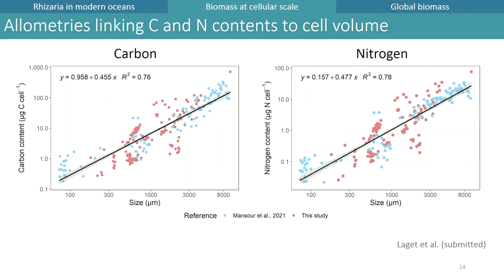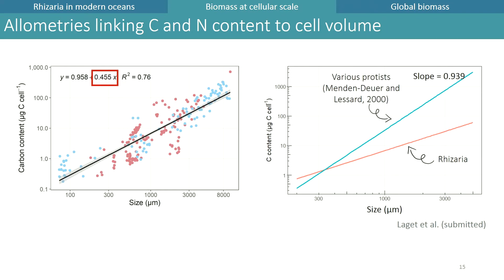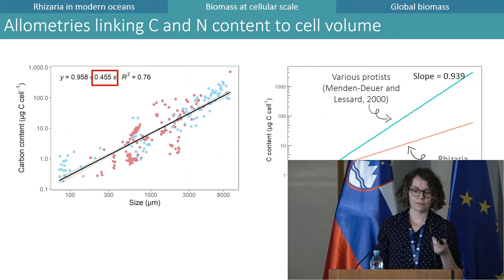Looking at the R-squared values, they are quite high, meaning that size can explain much of the variability in elemental composition. We then compared the slope of the carbon-to-size relationship to that found previously by Menden-Deuer and Lessard for various protists and found that the slope for Rhizaria was significantly lower. This means that for the same increase in size, carbon content will increase less than for other protists, and that the previous relationship would quickly give an overestimation of the carbon content of planktonic Rhizaria.